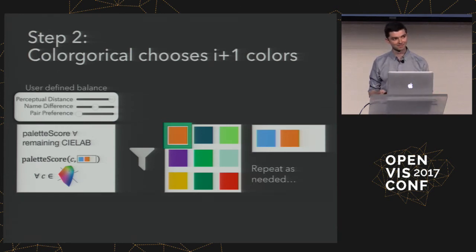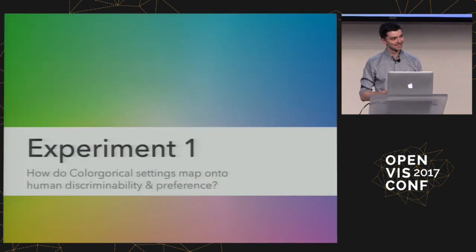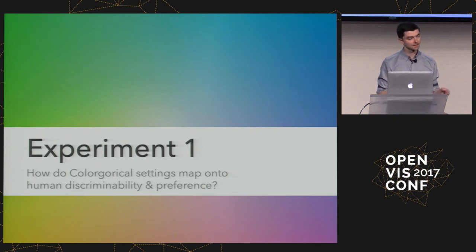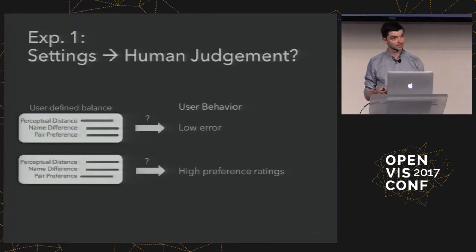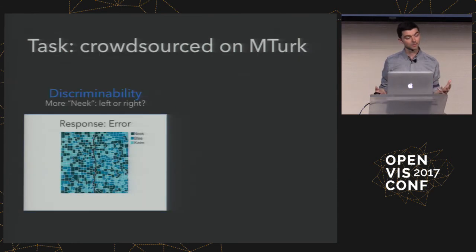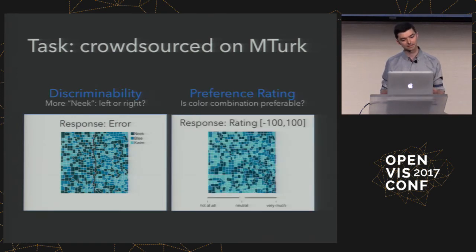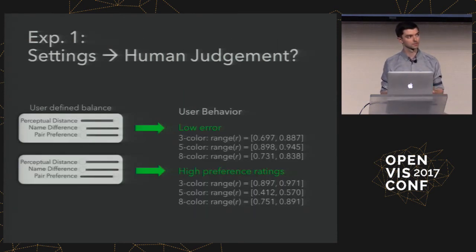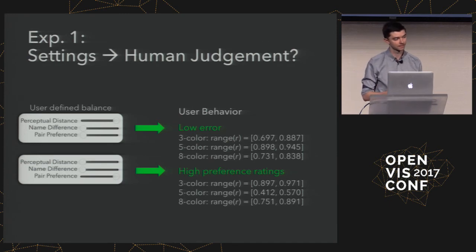All this is great in theory, but we need to validate it actually works. The first experiment tested whether these assumptions map — can we successfully take what we know from theory and apply it into practice? If we increase the perceptual distance slider, do we get lower error? If we increase pair preference, do we get higher preference ratings? We did a large Mechanical Turk survey with a discriminability task and a preference rating task, and we found that things were consistent. Increasing perceptual distance yielded lower error; increasing pair preference yielded higher preference ratings.